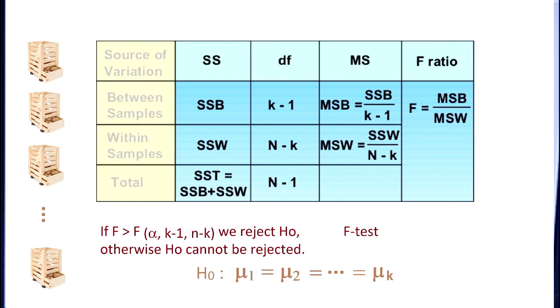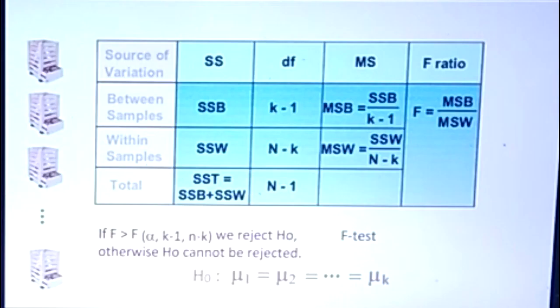We have to find the test value F and compare it against the quantile. The quantile has three parameters in this F-test. It has alpha, which is the level of significance. K minus 1 is the number of degrees of freedom between groups, meaning number of groups minus 1. And the third is N minus K. And if F is greater than this quantile, then we reject H0. Otherwise, H0 cannot be rejected and we have to claim all the groups have equal mean.